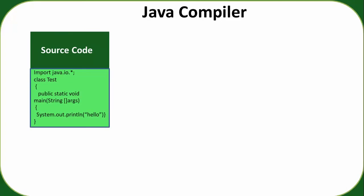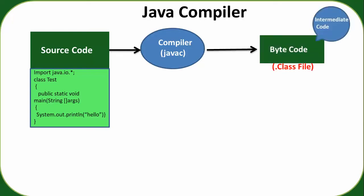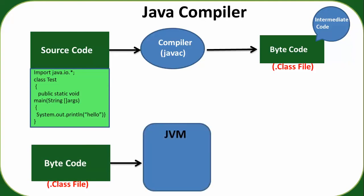With Java, when you compile Java source code using the Java compiler (javac), it does not generate machine code. Instead, it generates an intermediate code called bytecode, which has a .class file extension. This bytecode is not directly executable, but this intermediate code can run on any machine with any operating system, because bytecode is not tied to a physical machine — it is interpreted by a virtual machine.